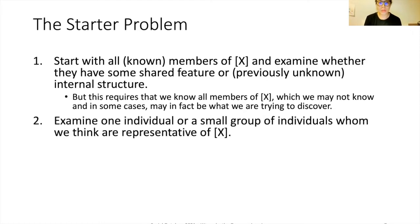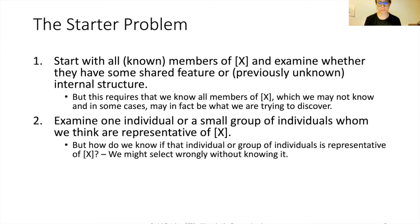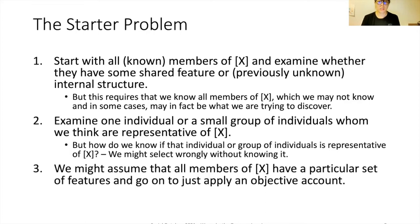A second way we might try to apply an objective account of group identity is to examine one individual or a small group of individuals whom we think are representative of that group. The problem is: how do we know the individual we've selected is truly representative? We might select the wrong individual, in which case we would be completely wrong about the group's identity.